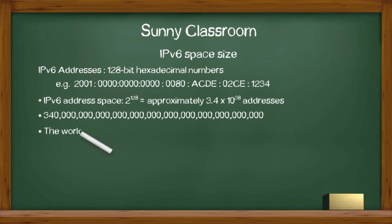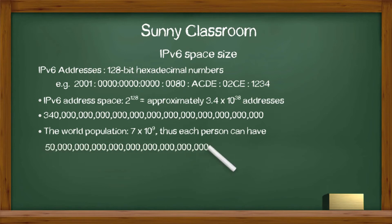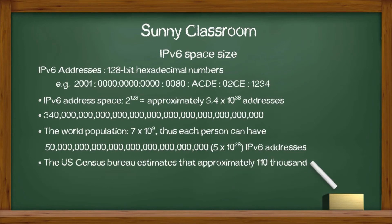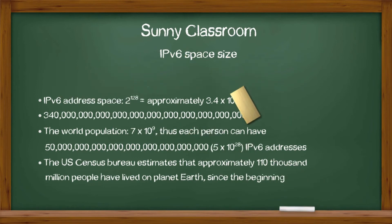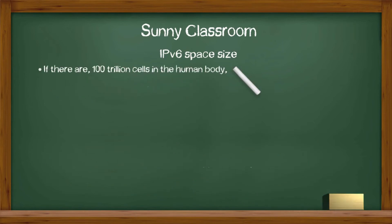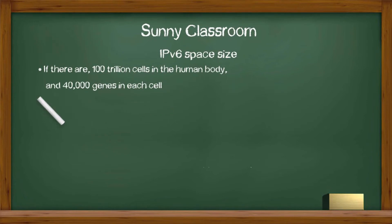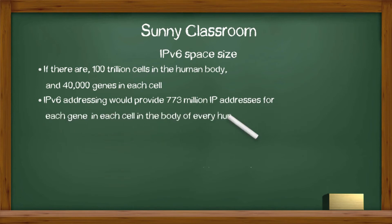Let's say the current world population is about 7 billion people, and each single person can have 5 times 10 to the 28th, or 50 octillion IPv6 addresses. According to the US Census Bureau, approximately 110 billion people have lived on planet Earth since the very beginning. If there are 100 trillion cells in the human body, and 40,000 genes in each cell, IPv6 would provide 773 million addresses for each gene, in each cell, in the body of every human being that has ever lived.